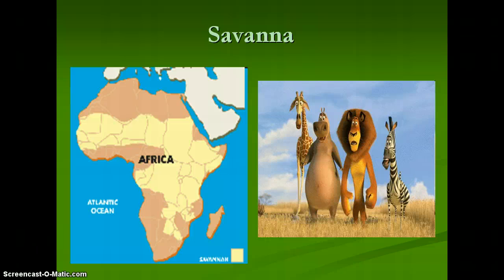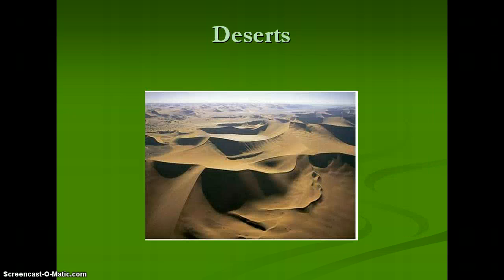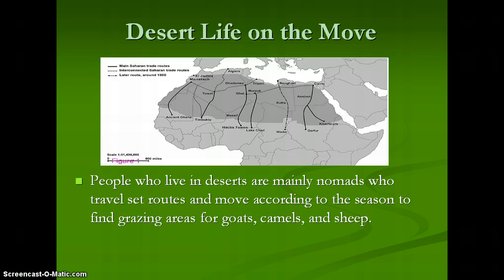The savanna, as mentioned, is what you think about primarily — that beige area makes up a large portion of Africa. Deserts also cover a large portion of Africa, and they are expanding through the process of desertification. The only people who really live in the desert are nomads who travel set routes according to the seasons, finding grazing areas for their goats, camels, and sheep. Obviously you can't graze in the desert, but you can pass through it on very particular routes.